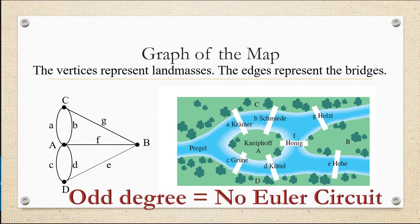Even one vertex of odd degree means no Euler circuit. The mystery was solved. It's not possible to cross over each bridge exactly once and start and end at the same place.